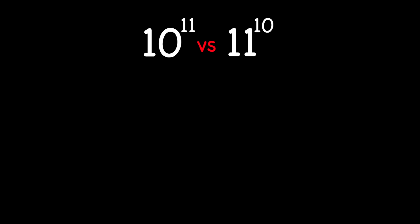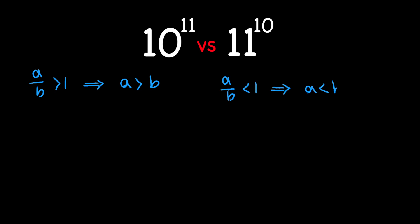One way to compare two numbers is to take a look at their ratio. Let's say we want to compare a with b. So we can say that if a divided by b is greater than one, we can conclude that a is greater than b. Otherwise, if a divided by b is less than one, we can say that a is less than b.